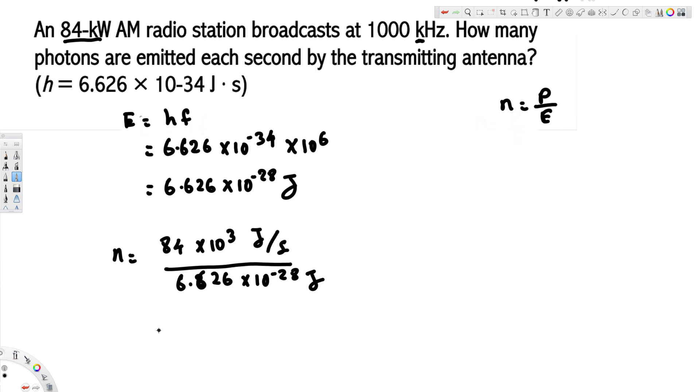If you calculate this one, that's going to give you photons per second, and that's going to be 1.267 times 10 to the power of 32 photons per second. If you round this one, it's 1.3 times 10 to the power of 32 photons per second, and that's going to be the final answer. I hope this helps, thanks for watching.